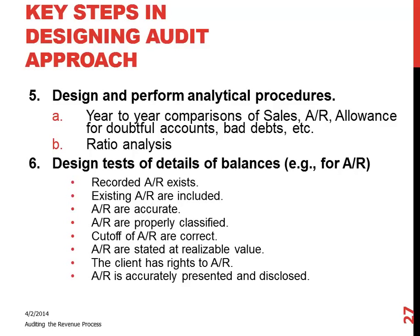Some of the analytical procedures that are common in the sales and revenue cycle include looking at sales from one period to the next, looking at changes in accounts receivable, looking at the change in allowance for doubtful accounts — does it make sense? What is accounts receivable as a percentage of sales? If we see that accounts receivable is rising but sales are flat or going in the opposite direction, that relationship doesn't make sense, so we would want to investigate why. You also do ratio analysis — day sales outstanding, number of days in sales — those types of ratios.